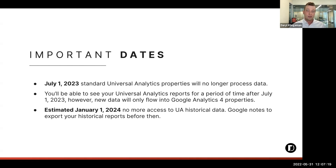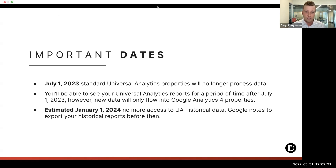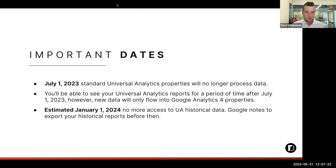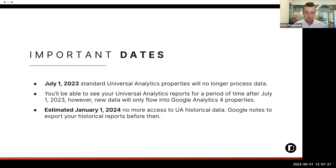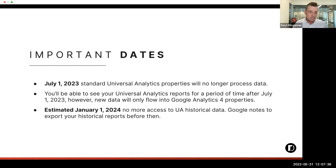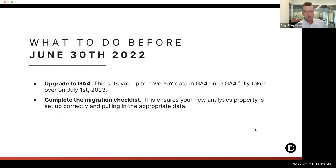Now you might be thinking: that is 13 months from now, I have over a year to get ready for this, so why are we acting like there's a whole bunch of urgency right now? The urgency comes from wanting to maintain year-over-year data inside the analytics platform. On the next slide, we're going to highlight that in order to maintain that year-over-year data, we need to get GA4 set up by the end of June this year.